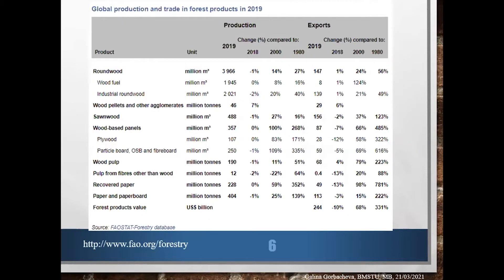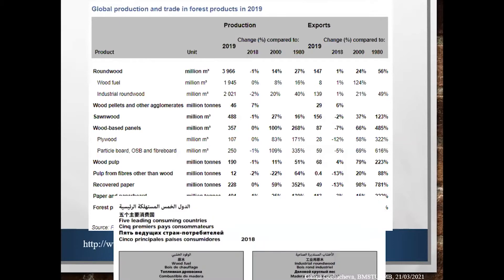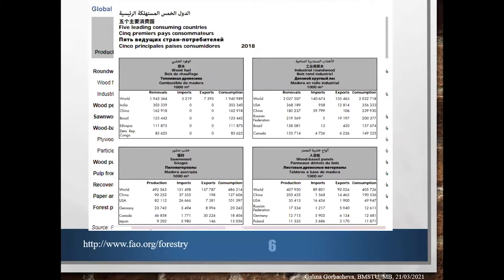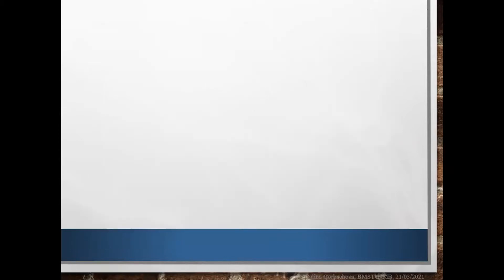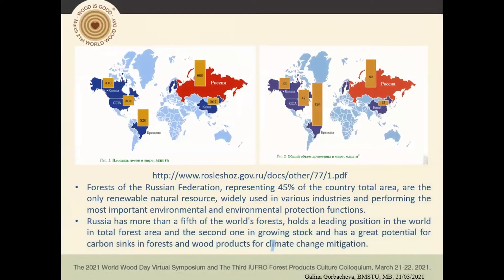Global production and trade of forest products in 2019 is shown on this slide, with the top five consuming countries being the United States and China. Russia is the largest forest country, holds a leading position in total forest area, second in growing stock, and has great potential for carbon sinks in forests and wood products for climate change mitigation.